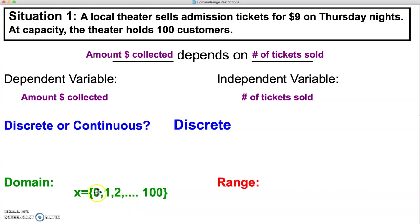We only have the values 0, 1, 2, 3 — we don't have anything between those values, so those points are not connected.